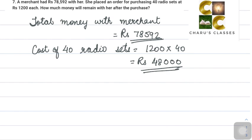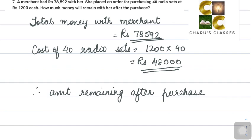This is the amount she has, and this is the amount she is spending. Therefore, amount remaining after purchase: we take the difference. From 78,592, 48,000 is spent. It is the difference of the two, which equals Rs 30,592.